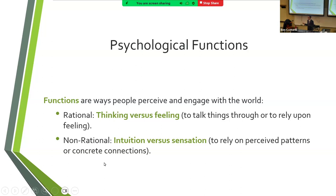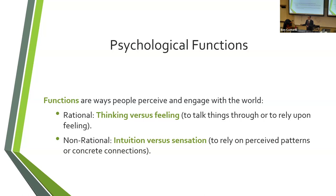The non-rational perceiving functions are intuition versus sensing. If you're sensing, you're paying attention to the present and looking at the small details — you're detail-oriented. Whereas if you're the intuitive type, what you're processing when you look at the world is not necessarily the small details but the big picture. Intuitive types are typically more future-oriented, more prone to daydreaming and fantasies, and more focused on the end result rather than the small pieces that make it up.